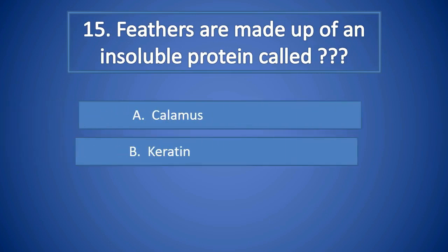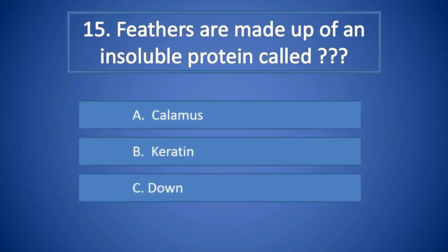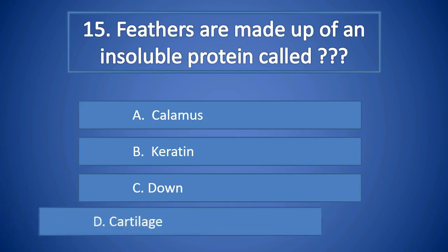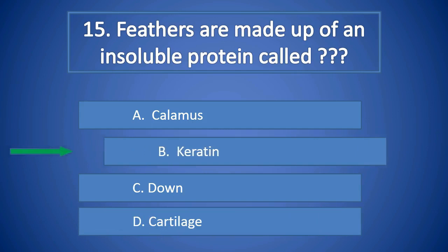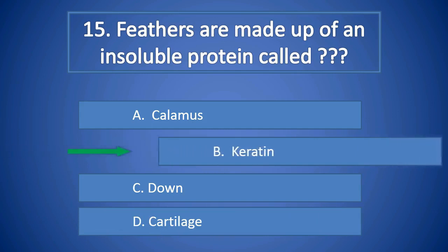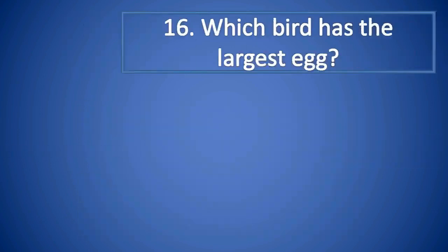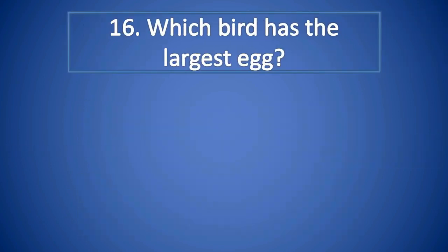Question Number 15: Feathers are made up of an insoluble protein called A. Keratin (variant), B. Keratin, C. Down, D. Cartilage. Right answer is B. Keratin.